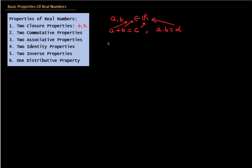Then comes the commutative property. If you add 2 plus 3 or 3 plus 2, will it make any difference? No. So this is what the commutative property says — that the order of addition is not important. So if there are two numbers A and B, A plus B will always be equal to B plus A. This is the commutative property of addition.